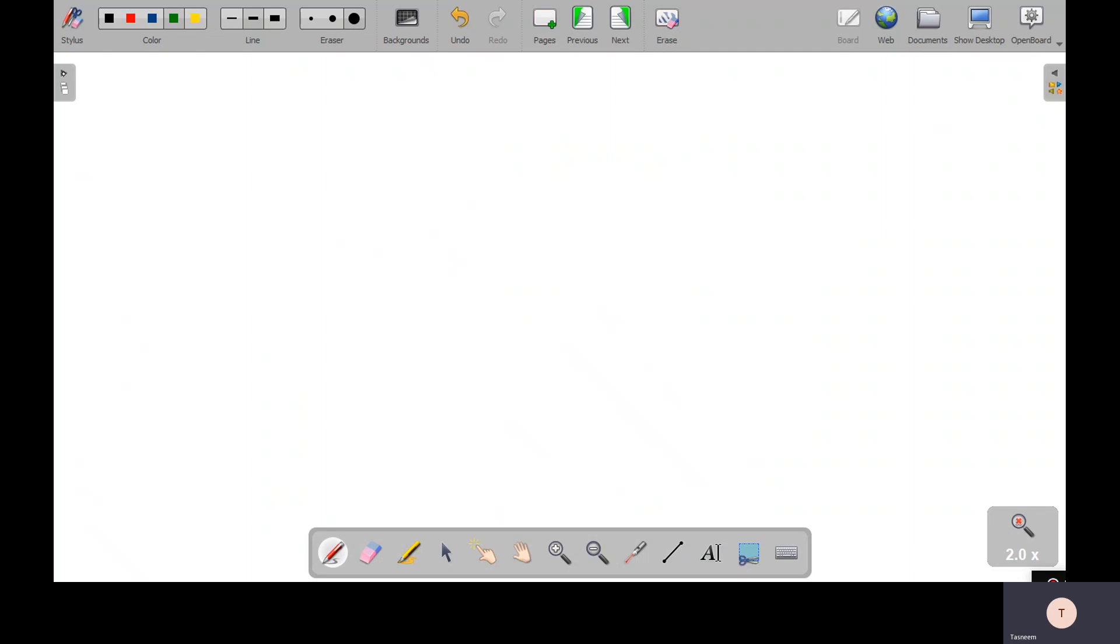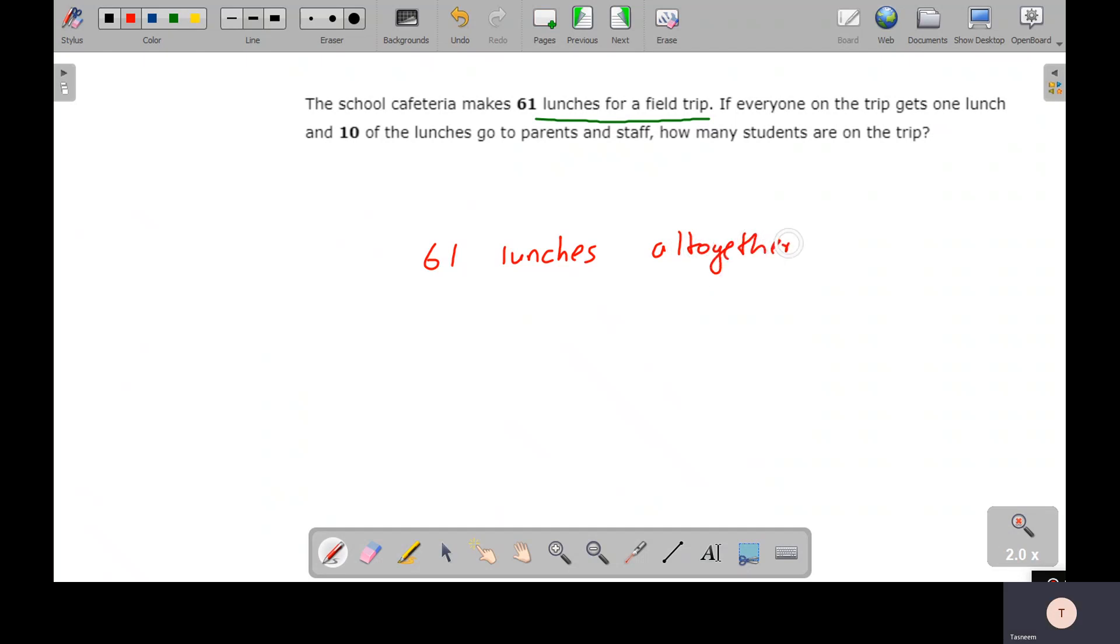Let us take another example, another word problem over here. So this problem says that the school cafeteria makes 61 lunches for a field trip. So the important part over here is to know this. If everyone on the trip gets one lunch and 10 of the lunches go to parents and staff, how many students are on the trip? Now this is a very interesting word problem and let's see how can we solve it. So the school cafeteria makes 61 lunches all together. So this is the total number of lunches which they make. If everyone on the trip gets one lunch and 10 of the lunches go to the parent and staff, so I need to go ahead and divide the 61 into kind of two parts.